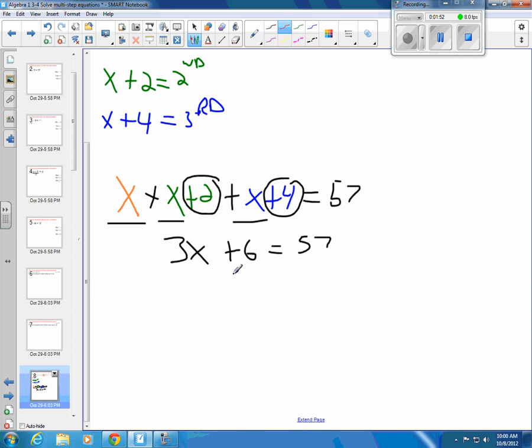Next step would be to get rid of the addition or subtraction. So I'm going to subtract 6 from both sides. The 6s cancel. The 3x comes straight down. And 57 minus 6 is 51. And is 51 divisible by 3? Well, 5 plus 1 is 6, and 6 is divisible by 3, so I know 51 is. So then I can divide both sides by 3. 3 divided by 3 is 1.